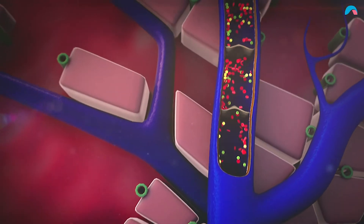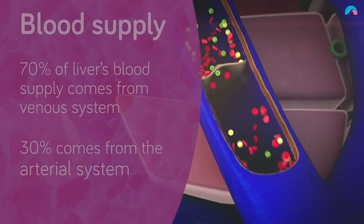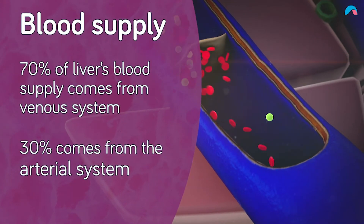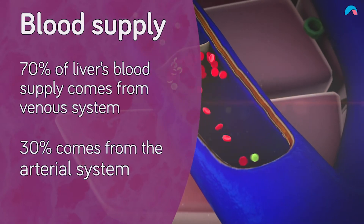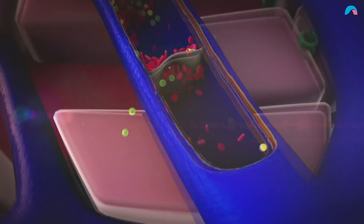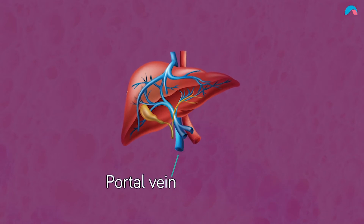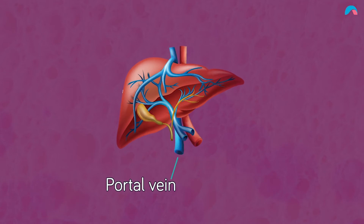Unlike other organs which receive their blood supply from arteries, approximately 70% of the liver's blood supply comes from the venous system while 30% comes from the arterial system. The main venous supply comes from the portal vein, which supplies nutrient-rich but oxygen-poor blood drained from the gastrointestinal tract, pancreas, and spleen.